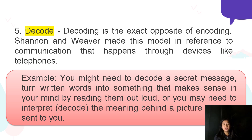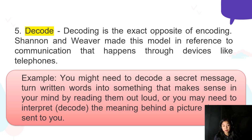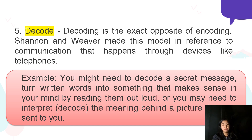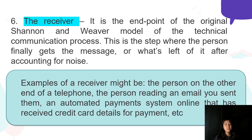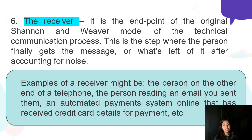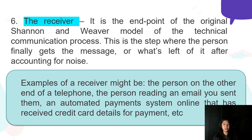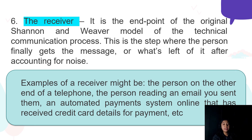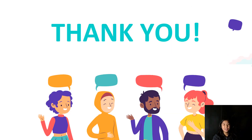For example, you might need to decode a secret message — turn written words into something that makes sense in your mind by reading them out loud, or you may need to interpret the meaning behind a picture sent to you. The receiver is the endpoint of the original Shannon and Weaver model of the technical communication process — this is the step where the person finally gets the message, or what's left of it after accounting for noise. A receiver might be the person on the other end of a telephone, the person reading an email you send them, or an automated payment system online that has received credit card details for payment.